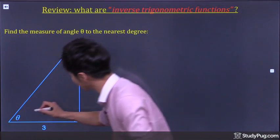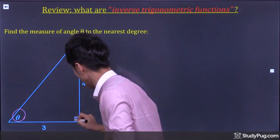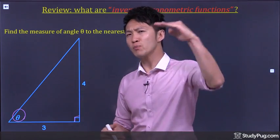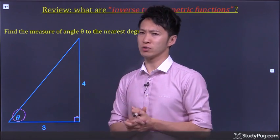Okay, so the question asks us to solve an unknown angle in a right angle triangle. So the first thing we have to determine is out of three primary trigonometry functions, which one should we use?